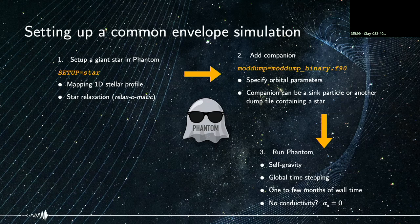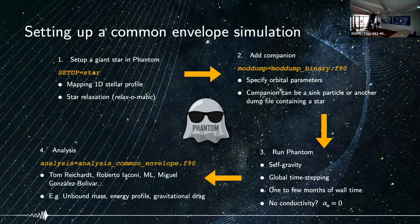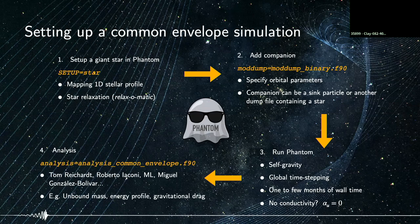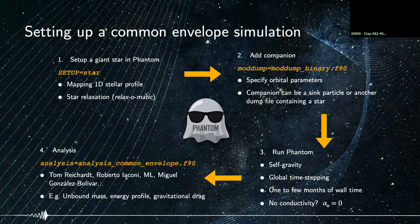These simulations often take one to a few months of wall time. In my simulations I turn off artificial conductivity. Finally, PHANTOM has a suite of analysis subroutines from the common envelope analysis file, mainly written by Tom Reichardt, Roberto Iaconi, myself, and Miguel. It contains subroutines for analyzing the amount of unbound mass, the energy profile of the common envelope, and the gravitational drag in the system.